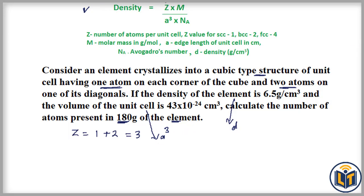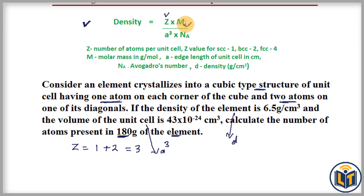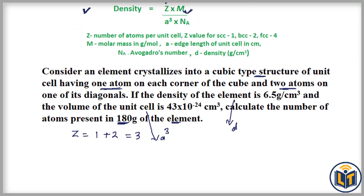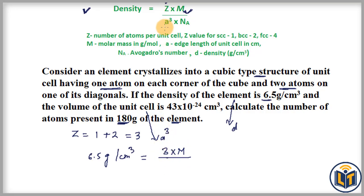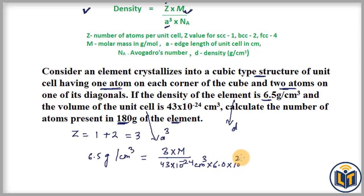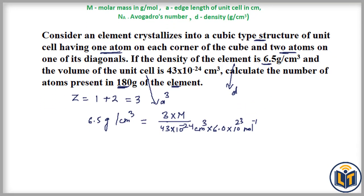Let's apply the density formula and plug in the values. Density is 6.5 gram per centimeter cube. This equals Z (which is 3) multiplied by M (the atomic mass), divided by the volume of the unit cell a³ which is 43 × 10⁻²⁴ centimeter cube, multiplied by Avogadro's number Nₐ = 6.0 × 10²³ per mole. Now we can do the cross multiplication and find out M.